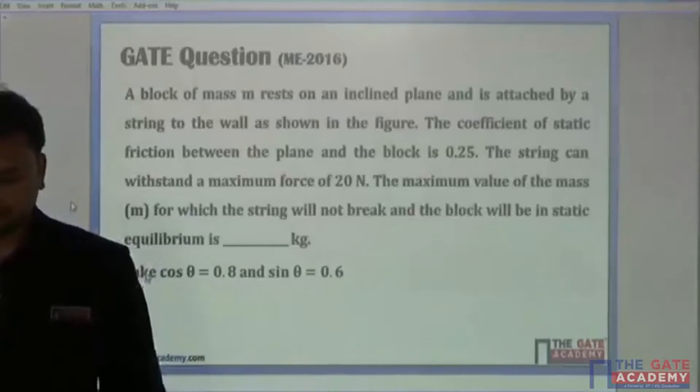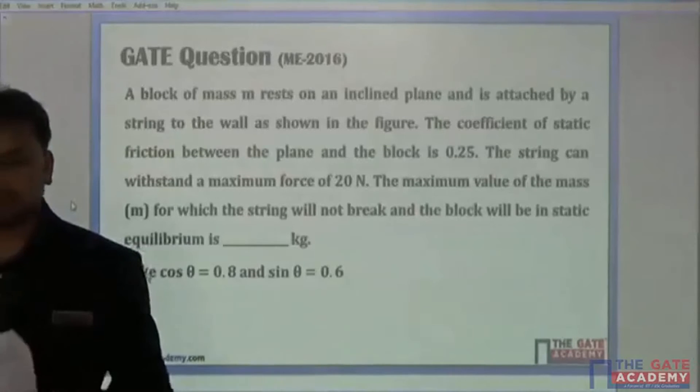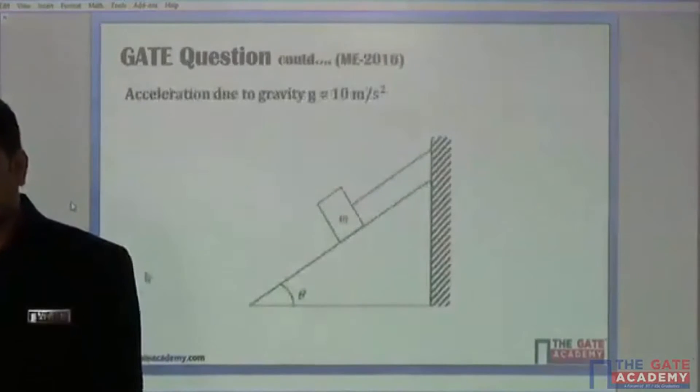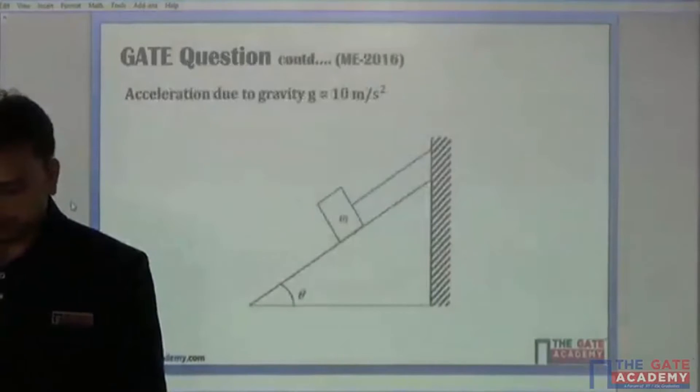Cos theta is given 0.8, sin theta is 0.6, and the acceleration due to gravity you can simply consider 10 meter per second square.